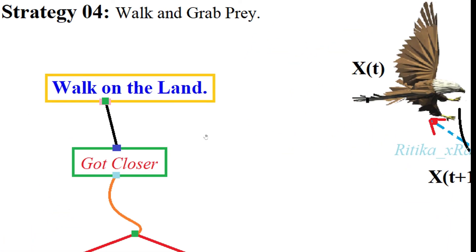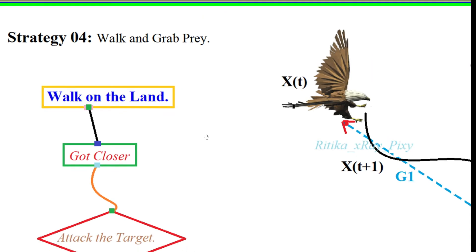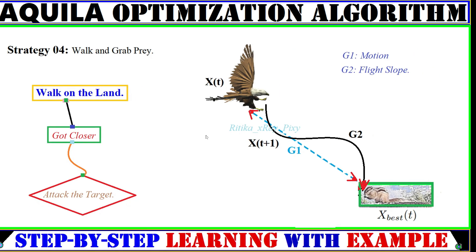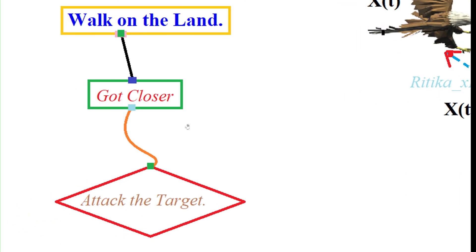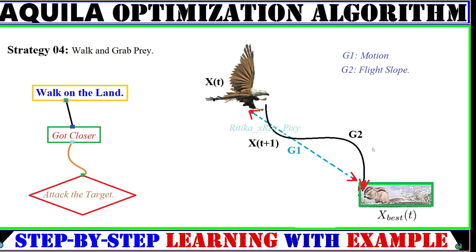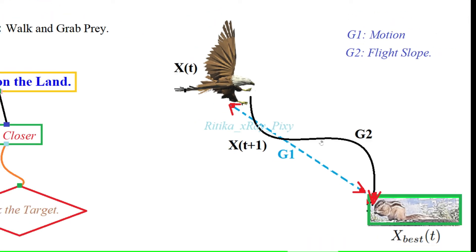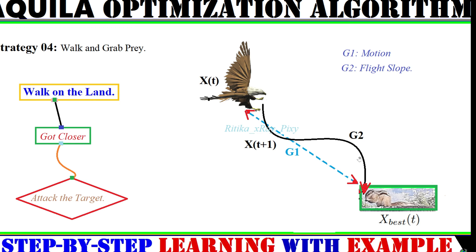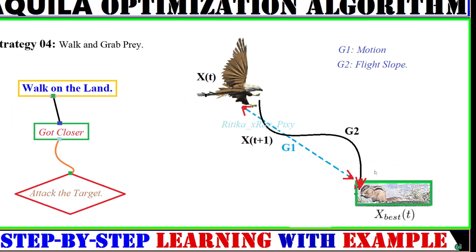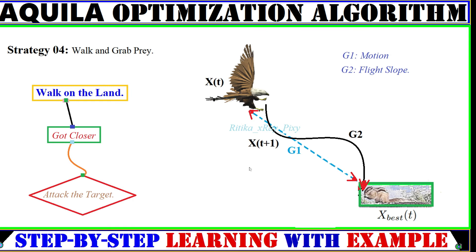The fourth strategy is walk and grab the prey. This method is used to attack large-size prey. In this method, Aquila walks on the ground, gets closer to the target, and tries to pull it. In the mathematical model, g1 is the motion and g2 is the flight slope.